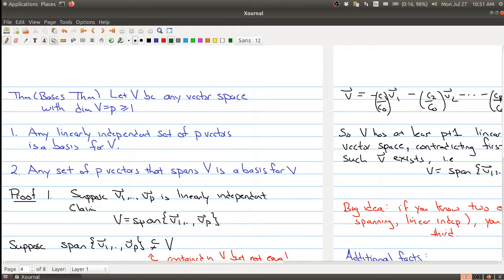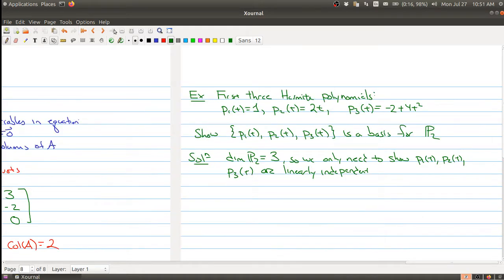Because we have a three-dimensional vector space, we would have three linear independent vectors and then it would form a basis. So that's our strategy.